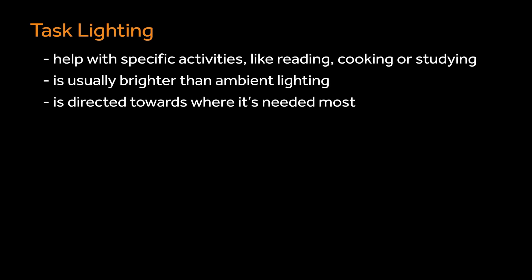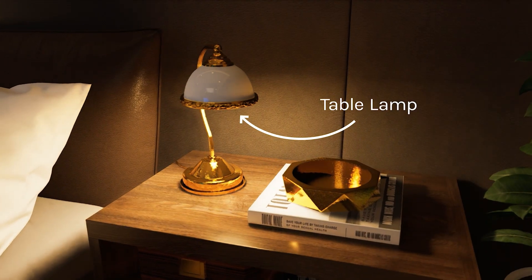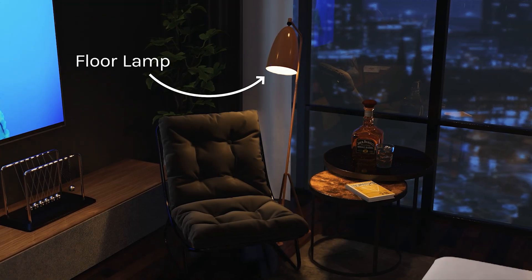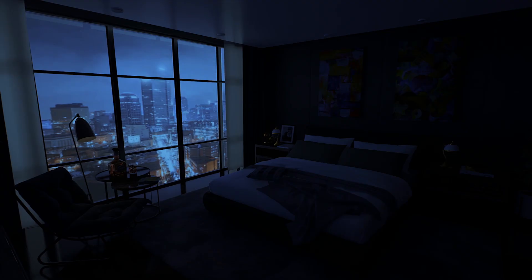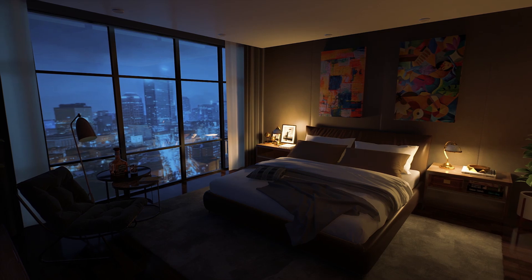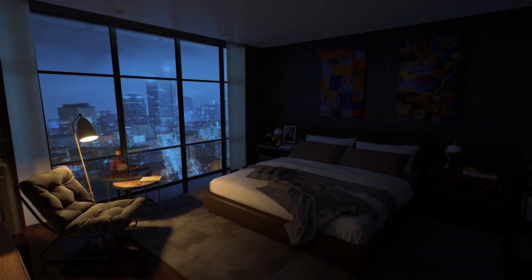Task light helps with specific activities like reading, cooking, or studying. It's usually brighter than ambient lights and is directed towards where it's needed most. For example, table lamp and floor lamp — they function as task lights in this room.